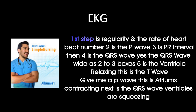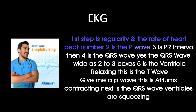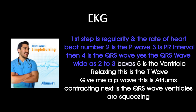First step is regularity and the rate of the heartbeat. Number two is the P wave. Three is the PR interval. Then four is the QRS wave — width is 2 to 3 boxes. Five is the ventricles relaxing, the T wave.